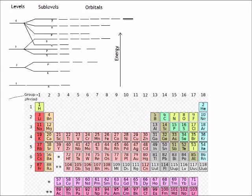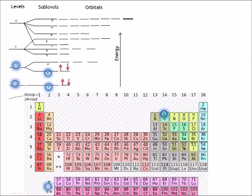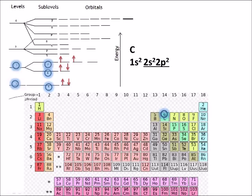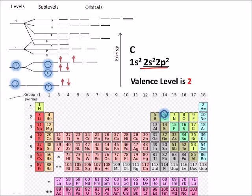Carbon has six protons in the nucleus and therefore six electrons, arranged in the lowest energy levels possible. The electron configuration for carbon is 1s2 2s2 2p2, and the valence level is the second level — the highest energy level that contains any electrons.